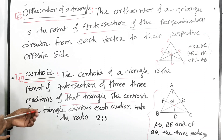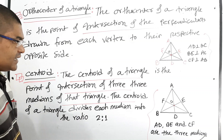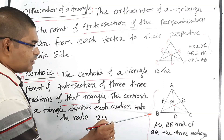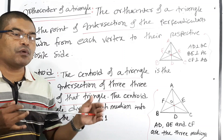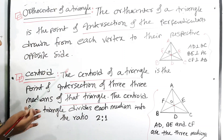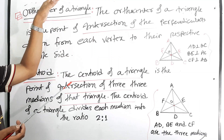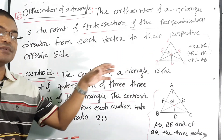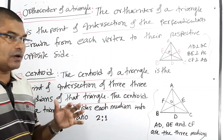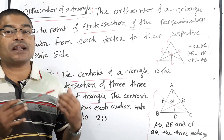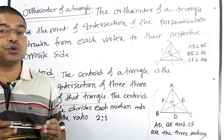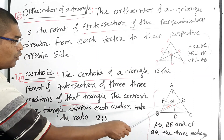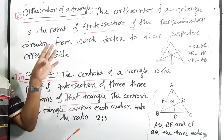Now the definition of centroid: in triangle ABC, AD, BE, and CF are medians. The difference between ortho center and centroid is that for the ortho center you draw perpendiculars, but for the centroid you draw medians. Any median divides the triangle into two equal areas. The three medians intersect at point O, which is the centroid.